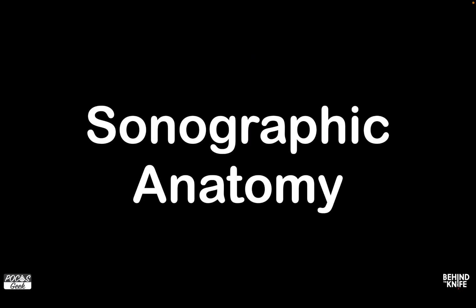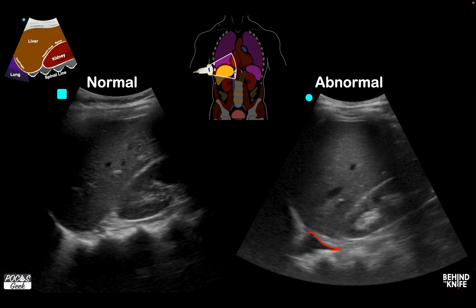Now we're going to talk about where we see these things on sonographic anatomy. On the left side of the screen we'll have normal on each one, and on the right, abnormal. As we go through each pathology, they'll each be circled in red. Looking at the pictogram, we can identify the liver, the hepatorenal space, and the kidney. We also have the spine line, which disappears into the diaphragm. On the abnormal side, the spine line continues past the diaphragm — this is the spine line sign, and it indicates pathology in the thorax. In this case, it's a small amount of hemothorax, and although small, this can indicate an area that needs to be watched.